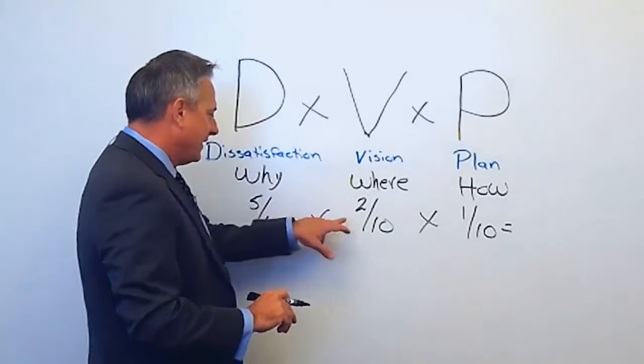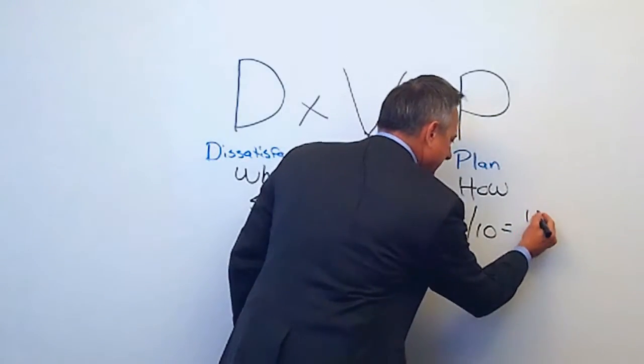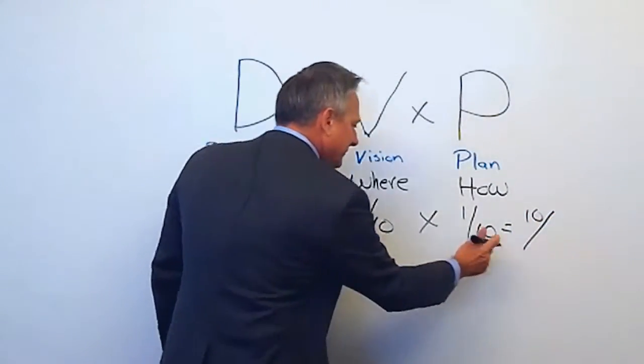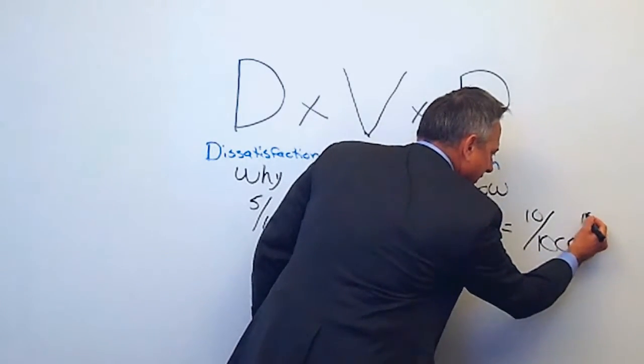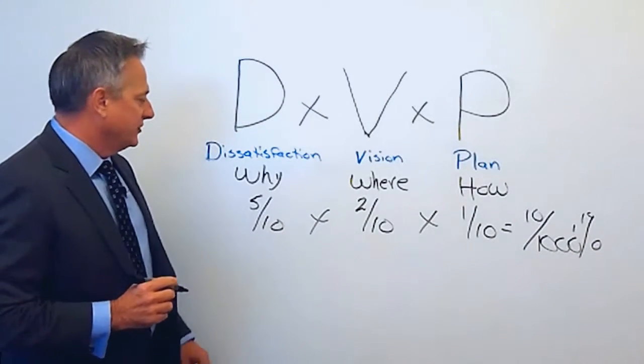So if we multiply that across, five times two is ten, times one is ten. Over ten times ten times ten is a thousand. You got about a one percent chance of change there in this organization.